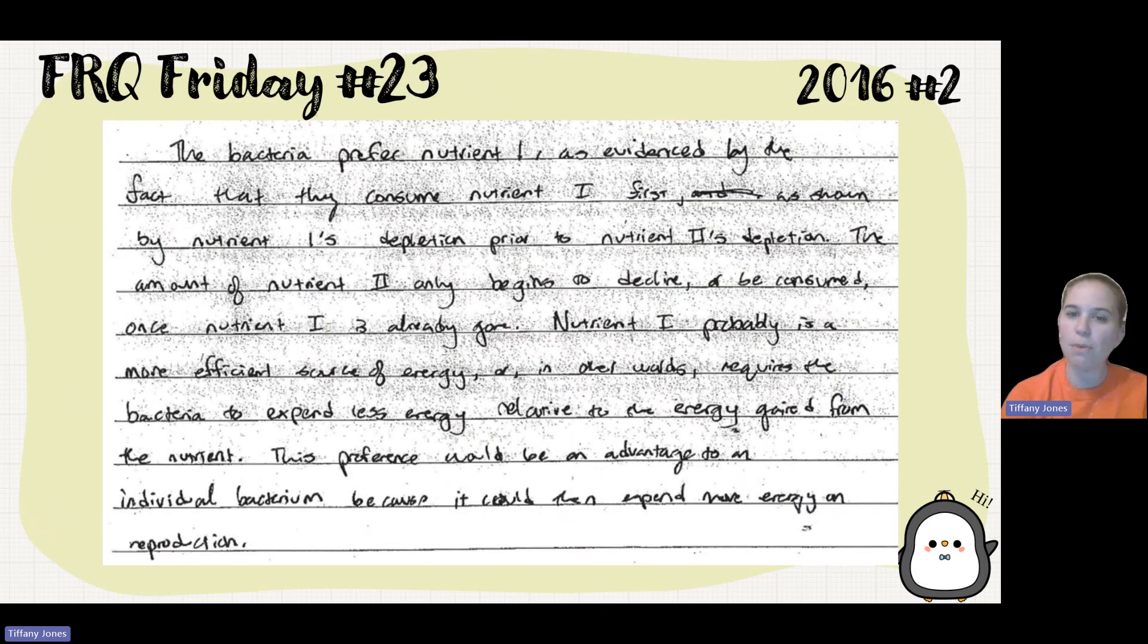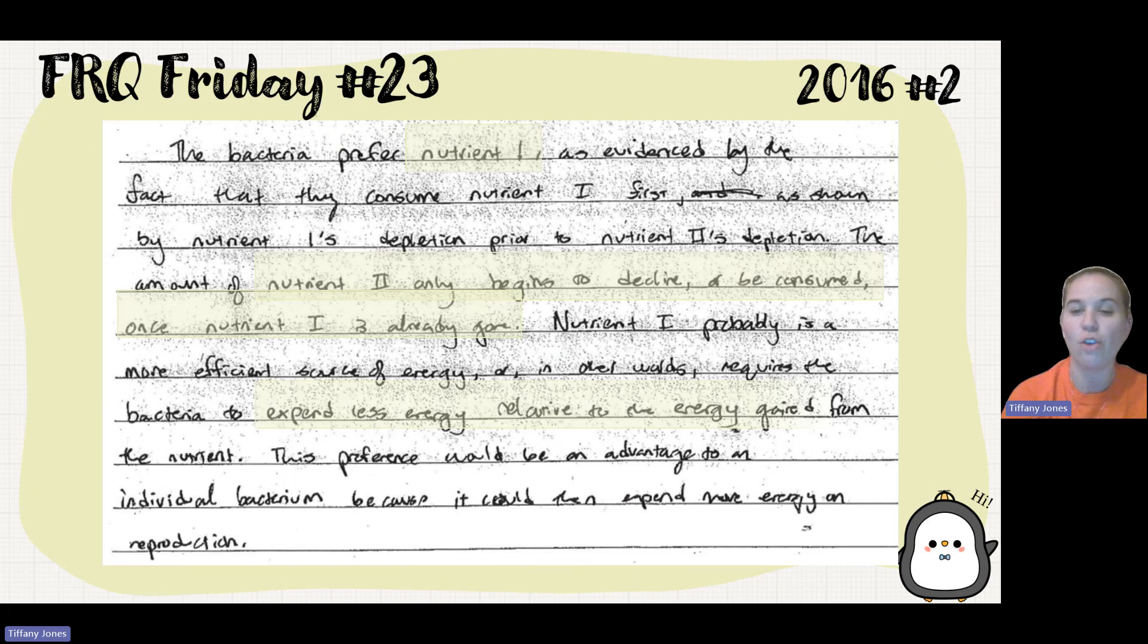A student said bacteria preferred nutrient one as evidenced by the fact that they consume nutrient one first, as shown by nutrient one's depletion prior to nutrient two's depletion. The amount of nutrient two only begins to be consumed once nutrient one is already gone. Nutrient one probably is a more efficient source of energy, or requires bacteria to expend less energy relative to the energy gained from the nutrient. This preference would be an advantage to an individual bacteria because it would then expend more energy on reproduction.